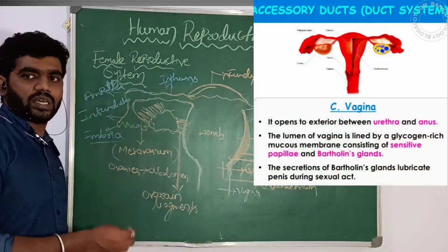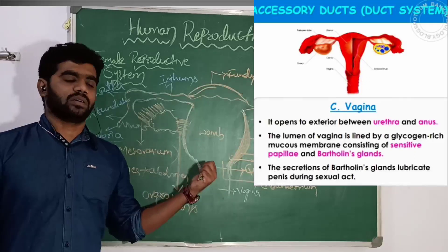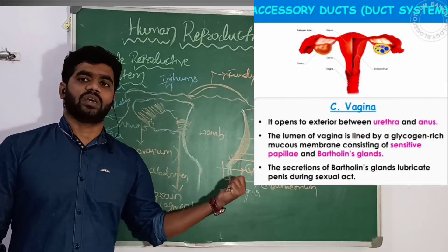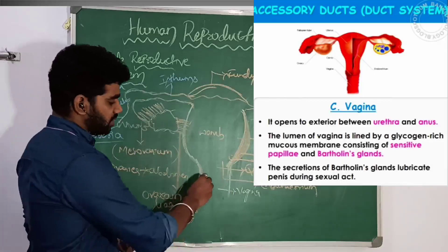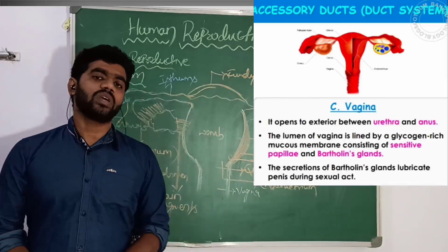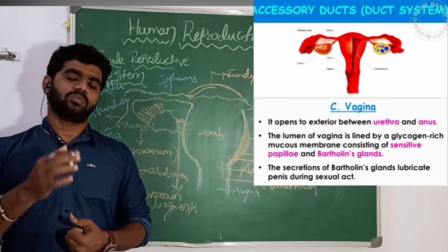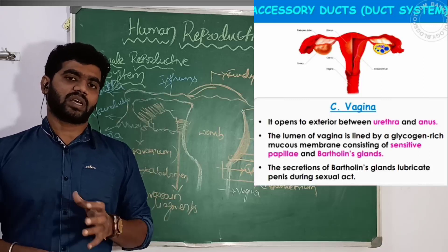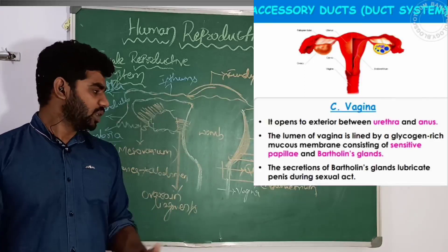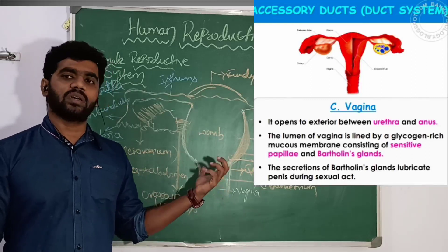The vagina is the opening between the uterus and the external genitalia. Associated with the vagina are the Bartholin glands, which secrete mucus.